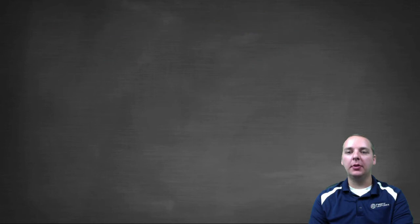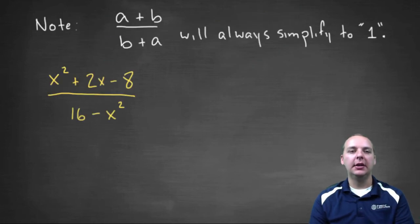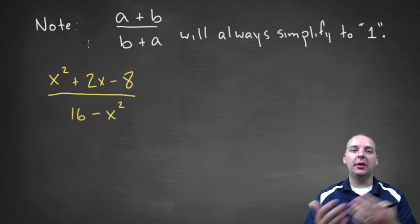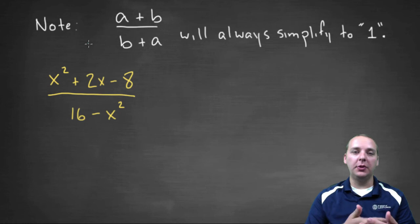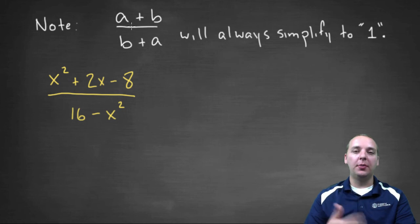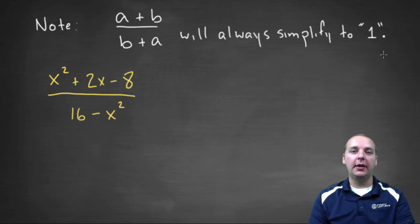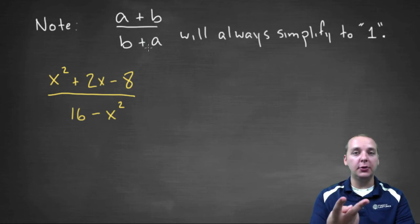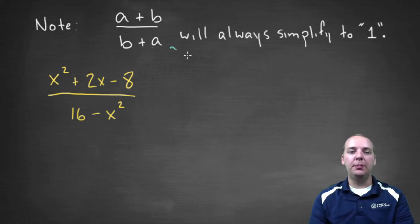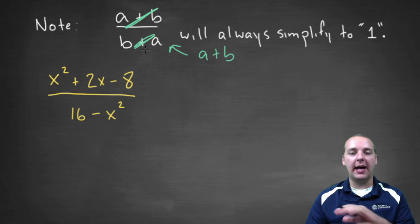Let's look at another situation related to opposites. Sometimes your factors will be a plus b over b plus a. Students will often think this will be negative one as well because they're in reverse order. But in fact that's not the case — a plus b divided by b plus a will actually just be positive one. Addition is what we call commutative, meaning the order doesn't matter: one plus two equals two plus one. So b plus a can just as easily be written as a plus b, and then they cancel. These just flat out cancel — no negative one, nothing like that.